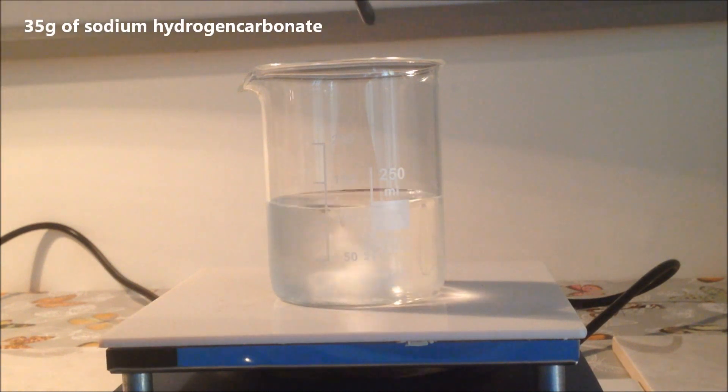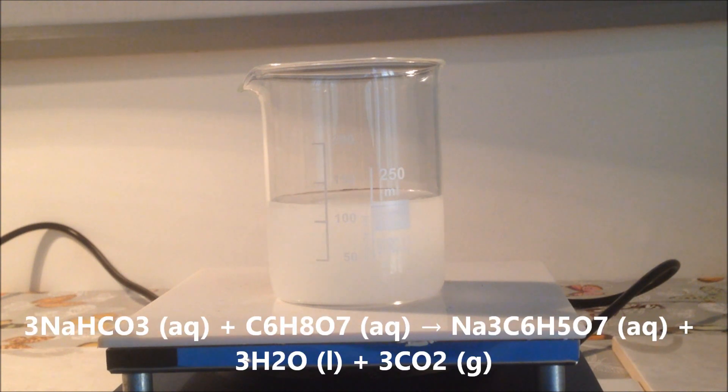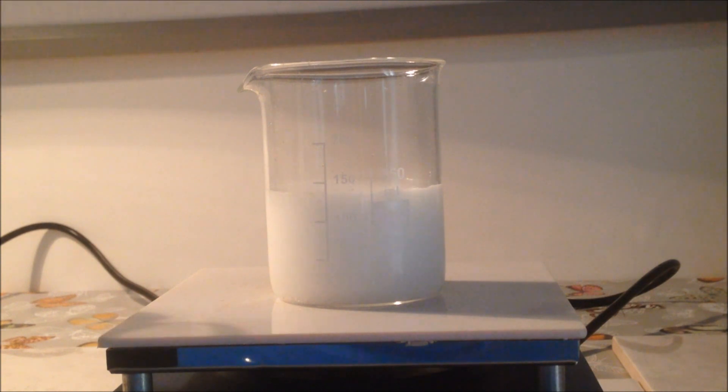I added about 35g of sodium hydrogen carbonate slowly, spatula full by spatula full. You want to be careful of overflowing your container. As you can see by the equation on the screen, it releases carbon dioxide, and this can cause nasty fizzing if you add it too quickly, which has happened to me way too many times and won't be happening to me again.